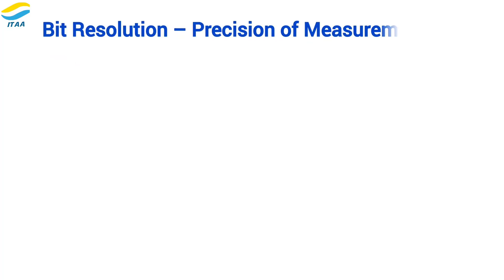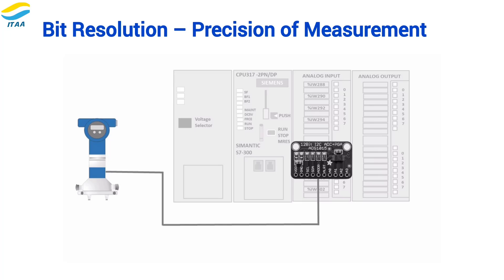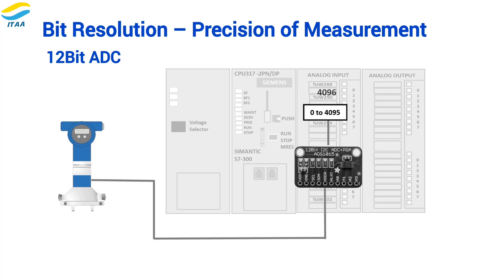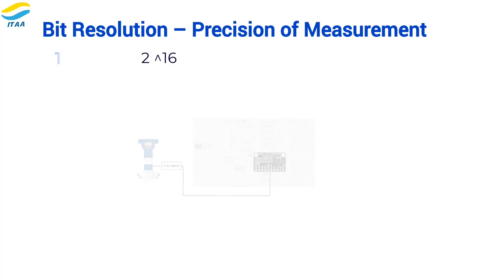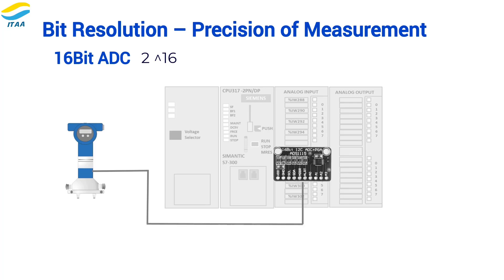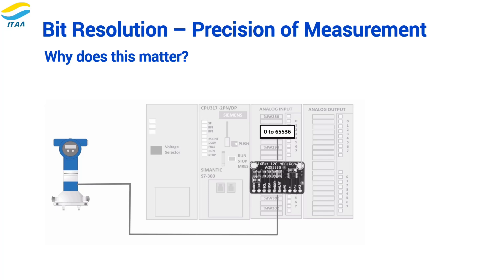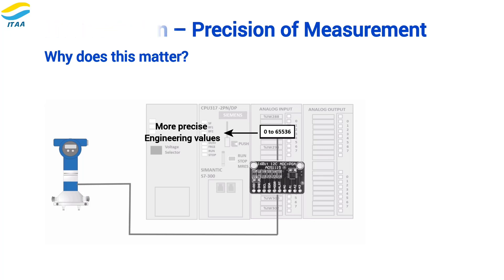Let's talk about bit resolution, which affects how precisely the PLC can measure changes in the tank level. In a 12-bit ADC, we get 4096 possible raw values from 0 to 4095. But with a 16-bit ADC, the range expands to 65,536 counts, enabling even finer measurements. Why does this matter? Higher bit resolution means smaller steps between raw values, so our engineering values become more precise. That increased precision means better control and accuracy in our system.